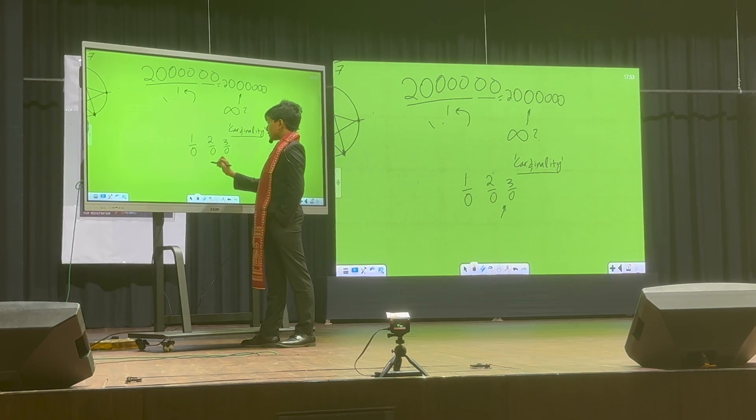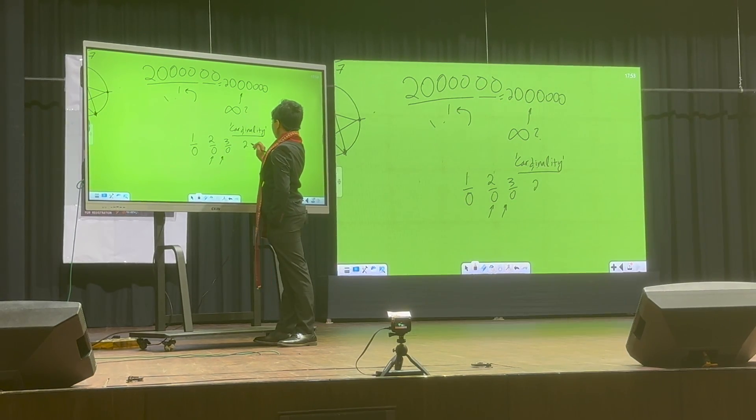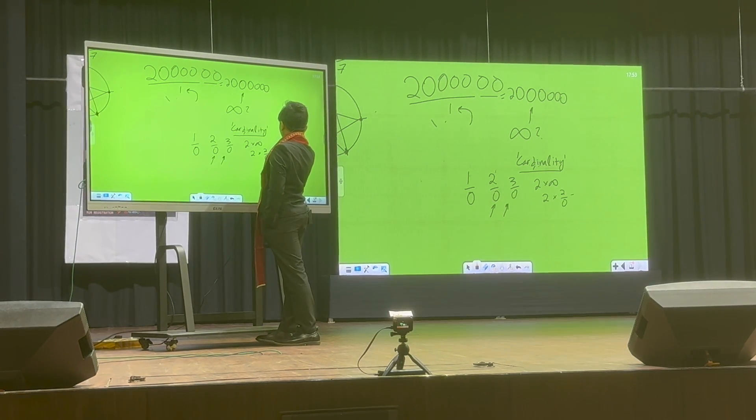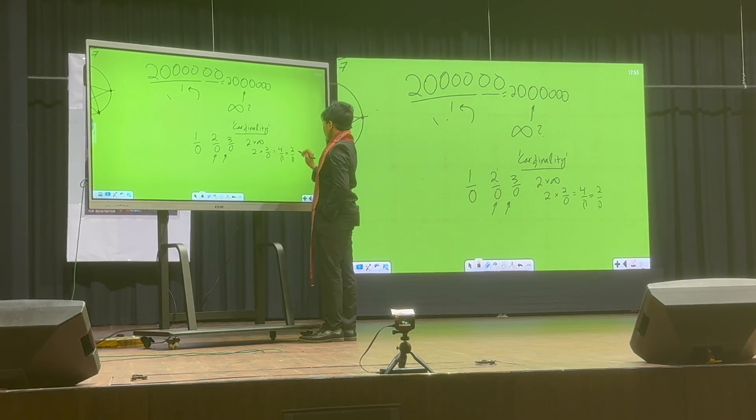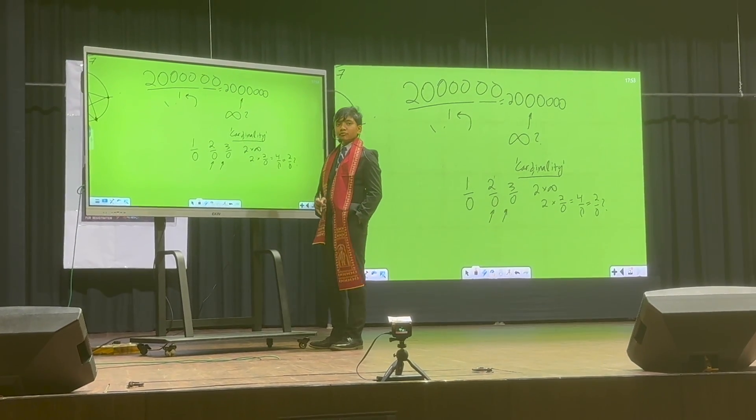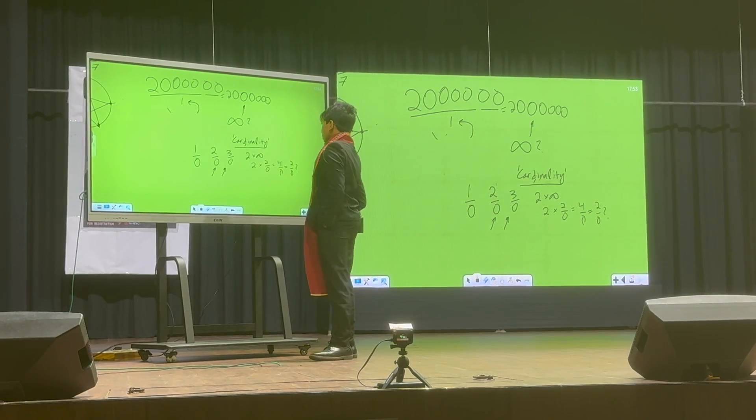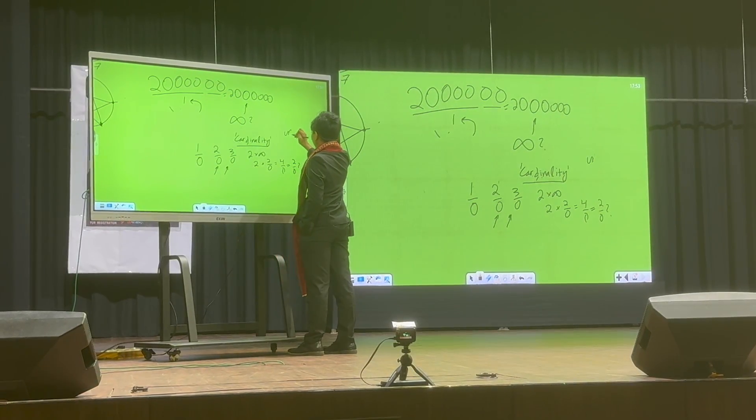What is two times infinity? Is two times two over zero equal to four over zero or two over zero? So we can't really definitely say that it is infinity either. Instead, we just leave it as undefined.